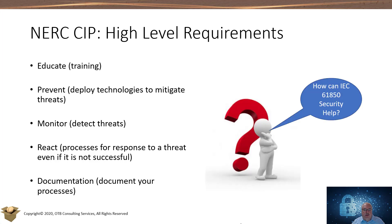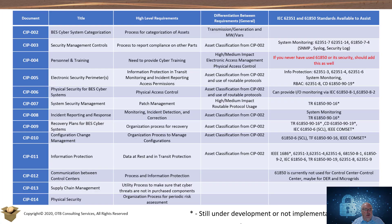So how can 61850 security help meet NERC CIP requirements? This table is very busy, but you can see there are many standards related to system monitoring. There are standards that assist in providing role-based access control, system monitoring, and data-in-transit protection for information that goes across an electronic security perimeter. As with most IEDs, they have the ability to monitor I/O and therefore can provide some help in monitoring physical asset access to the substations or the IED.